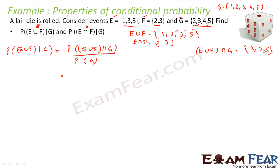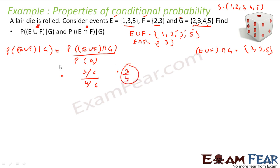The probability of (E∪F)∩G is 3 by 6 — three elements out of the total six elements in the sample space. And the probability of G is 4 by 6, since G has four elements. So the result is 3 by 4.